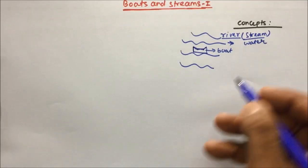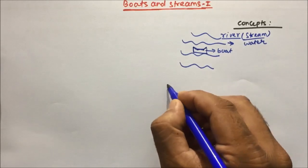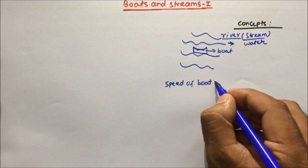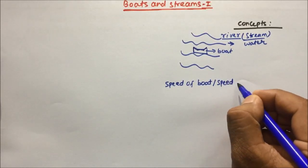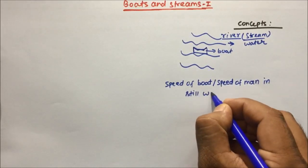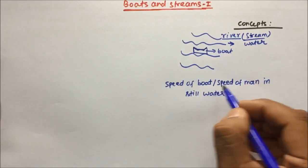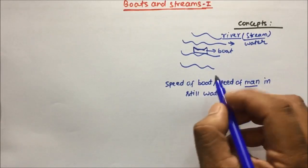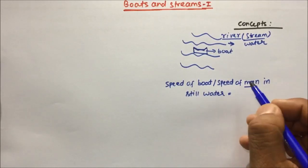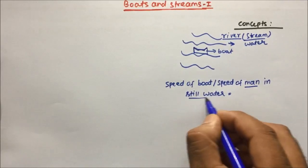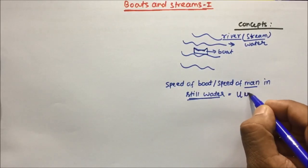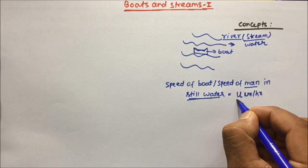There are a few terms which we have to keep in mind before solving the problem. There will be the Speed of Boat, or Speed of Man in Stillwater — meaning when the water is not moving. We assume this is U km per hour, which is the standard notation we are going to use.